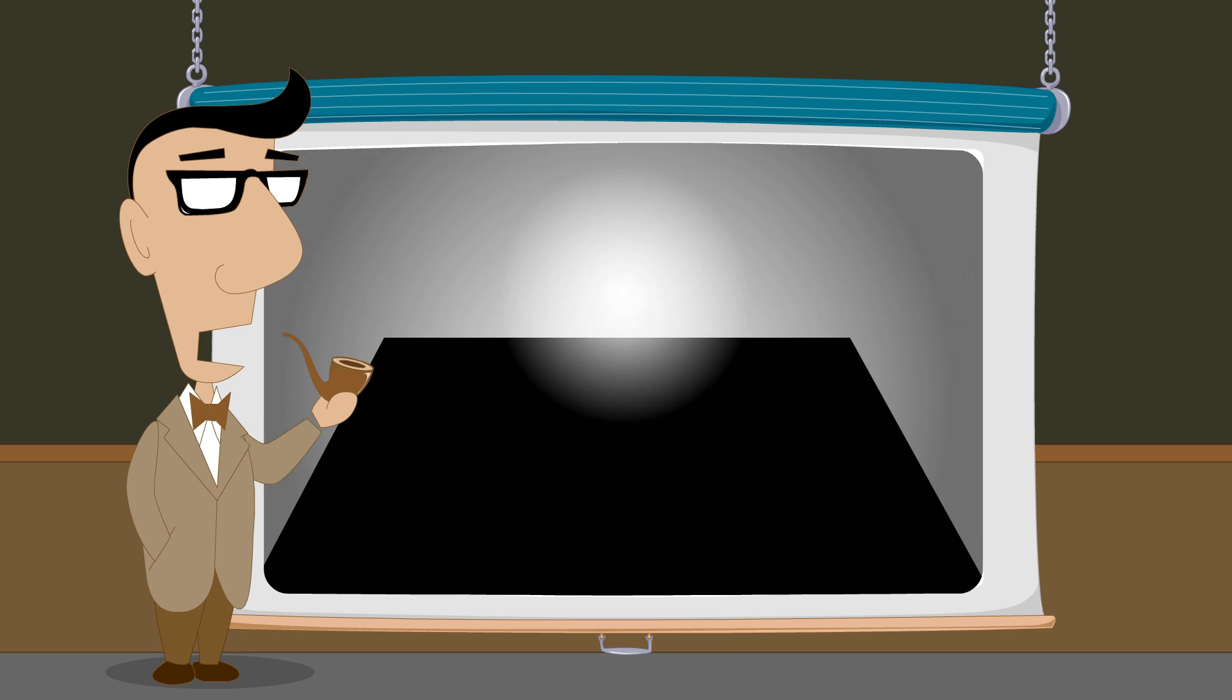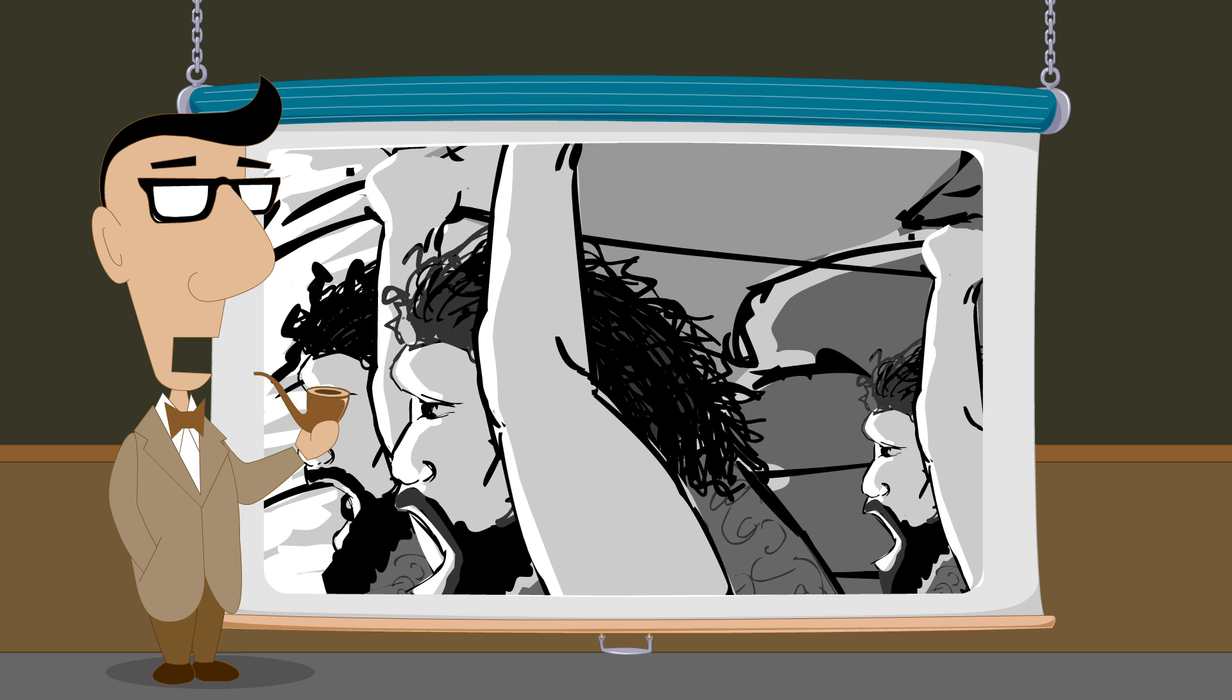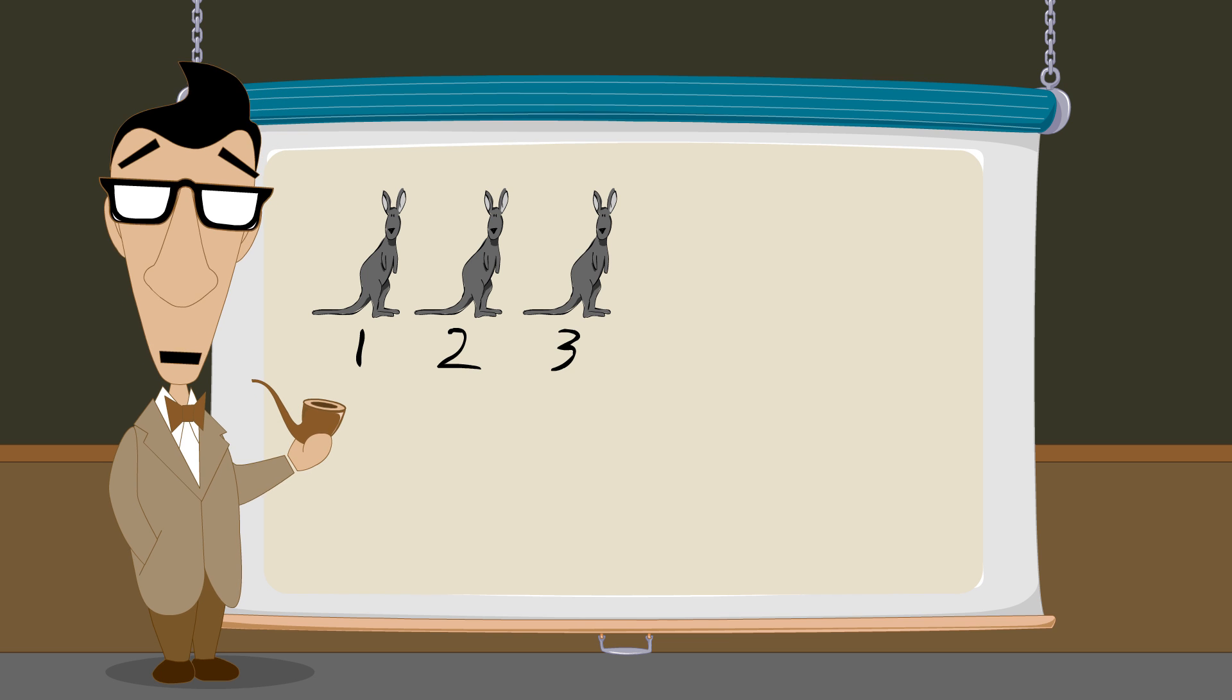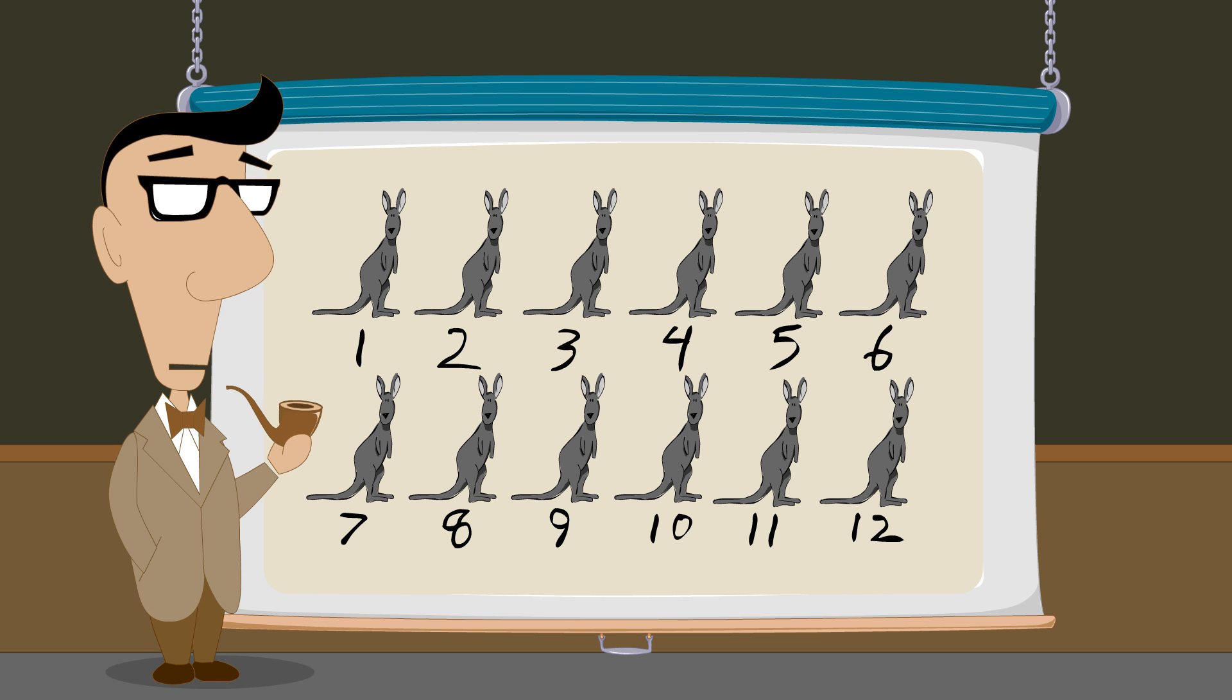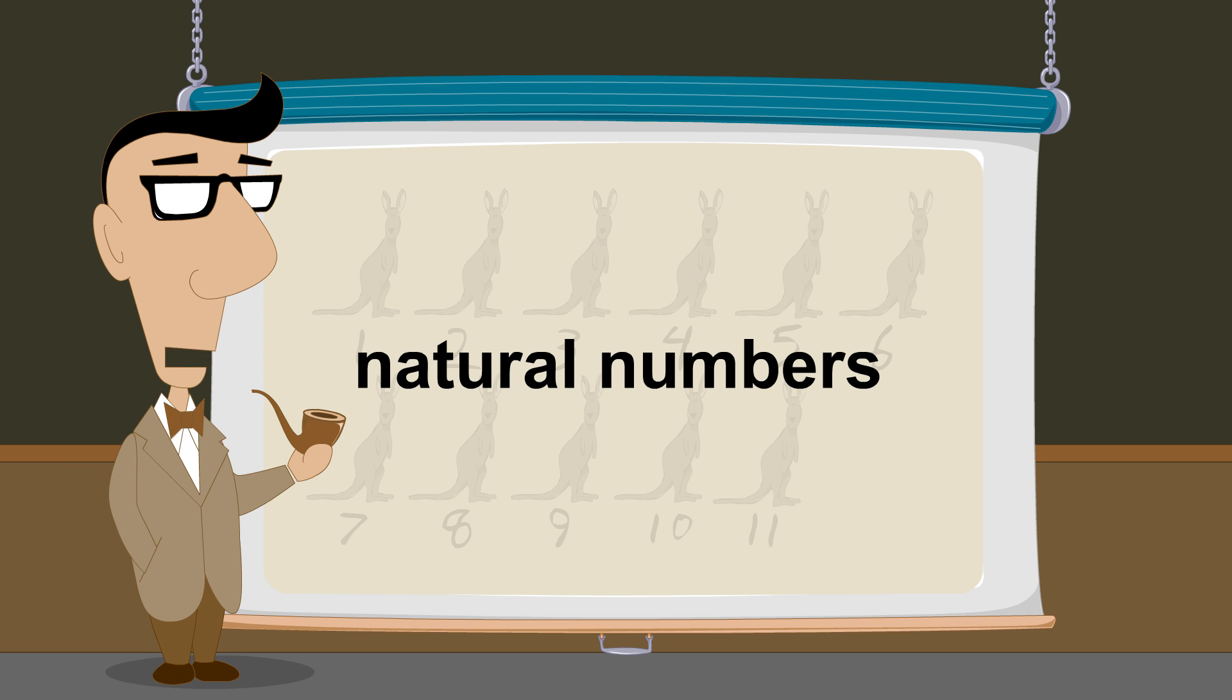In the last lecture, we explored the dawn of number systems. These early number systems were concerned only with numbers used to count objects. In mathematics, we call these counting numbers the natural numbers.